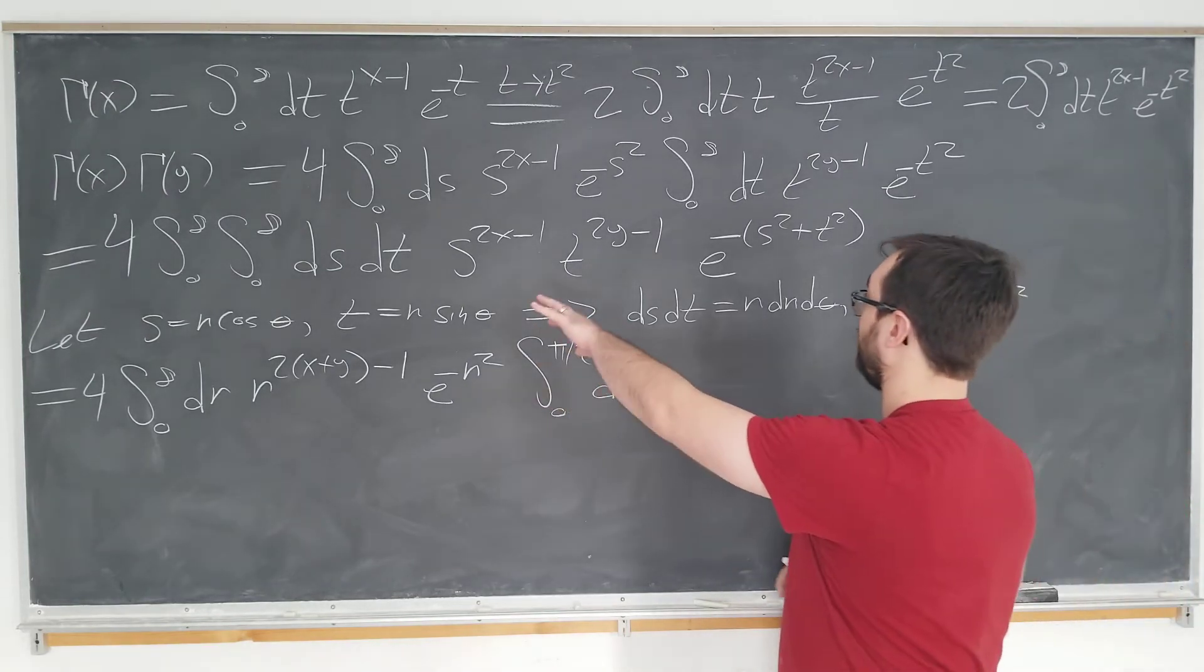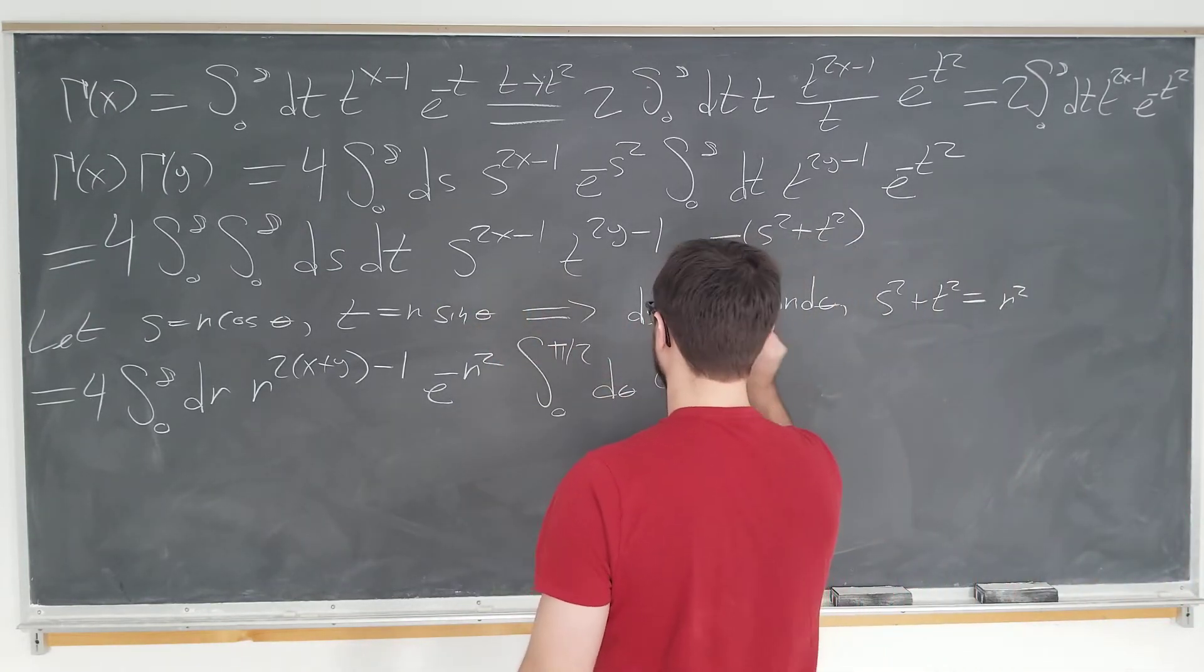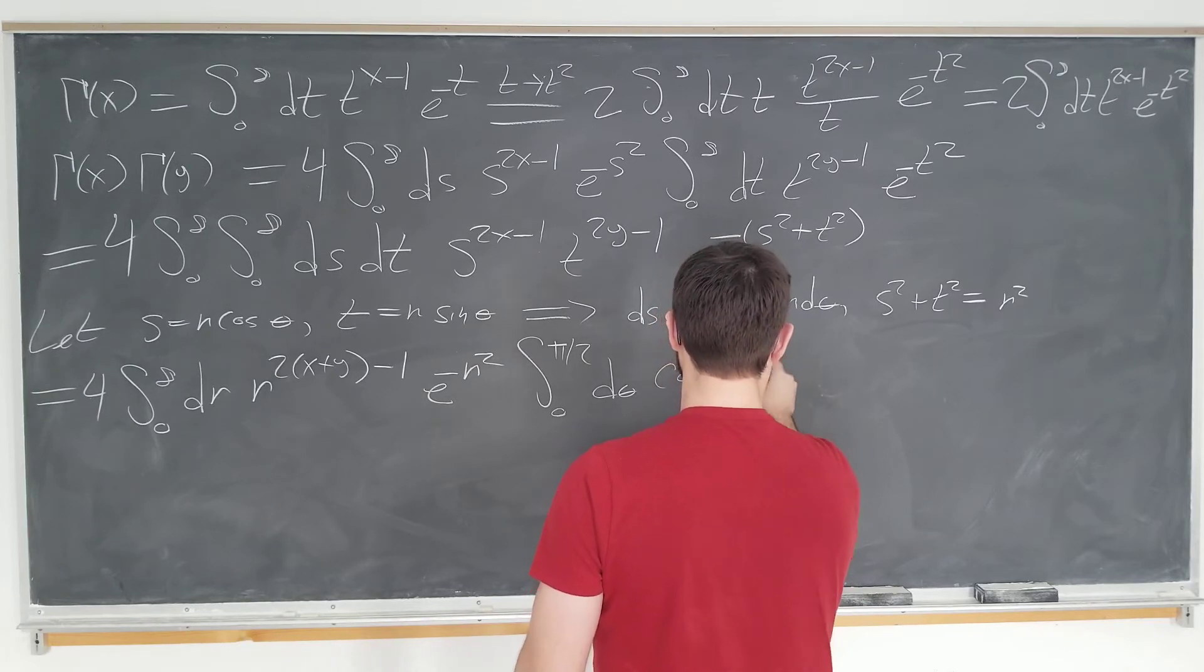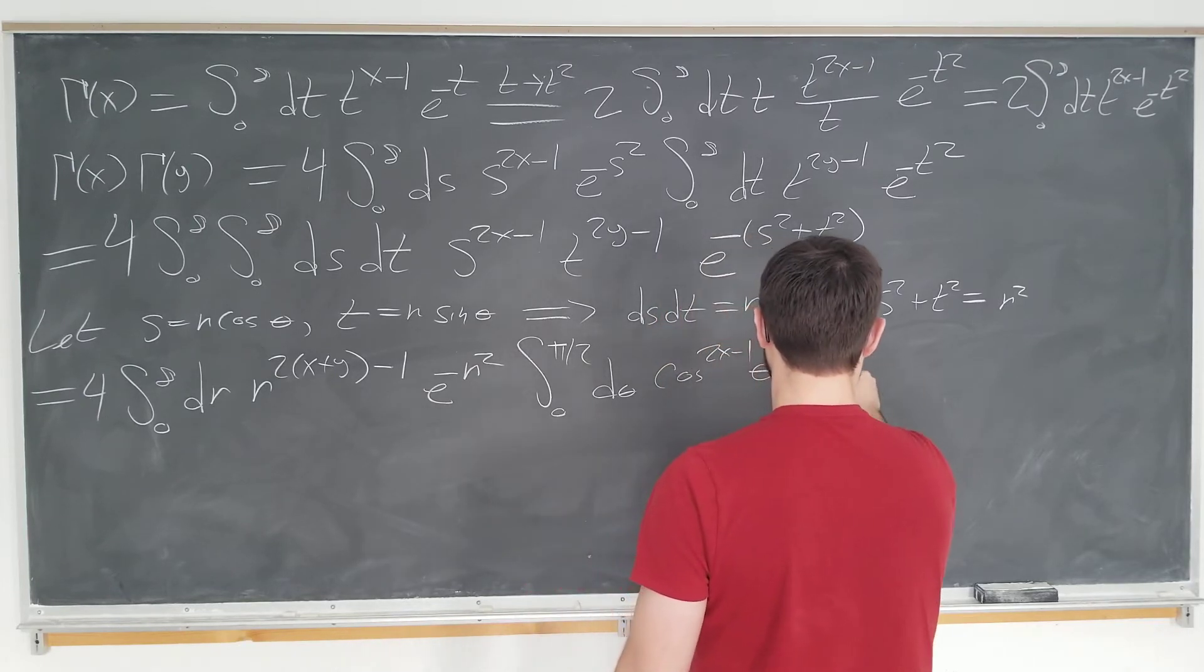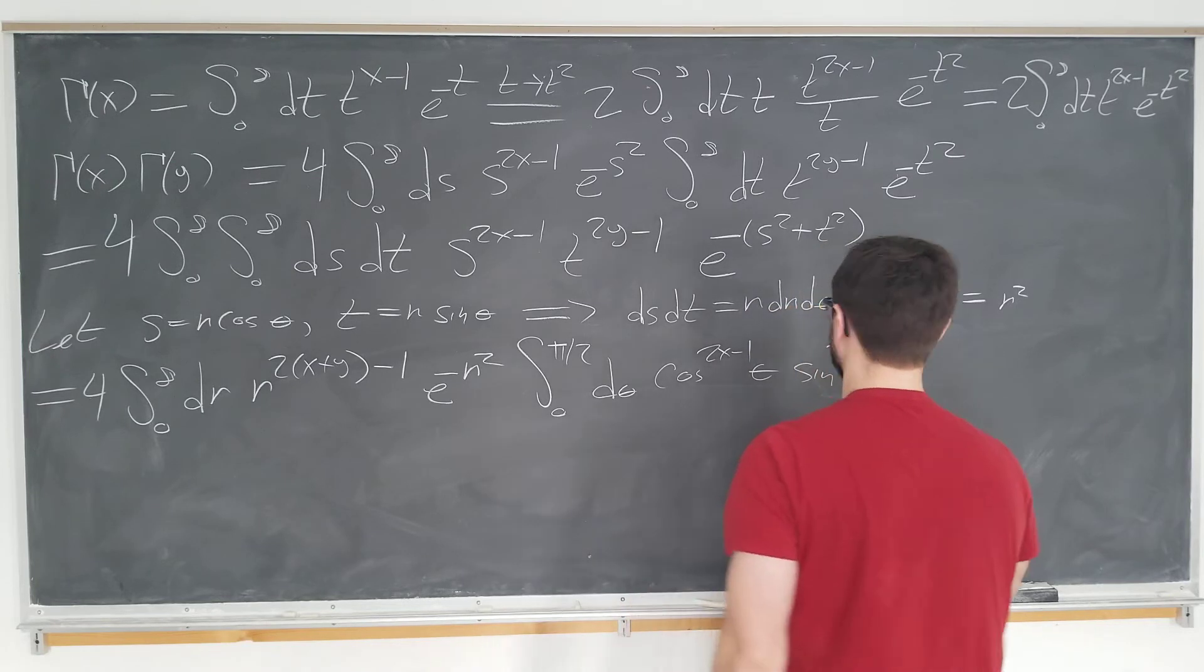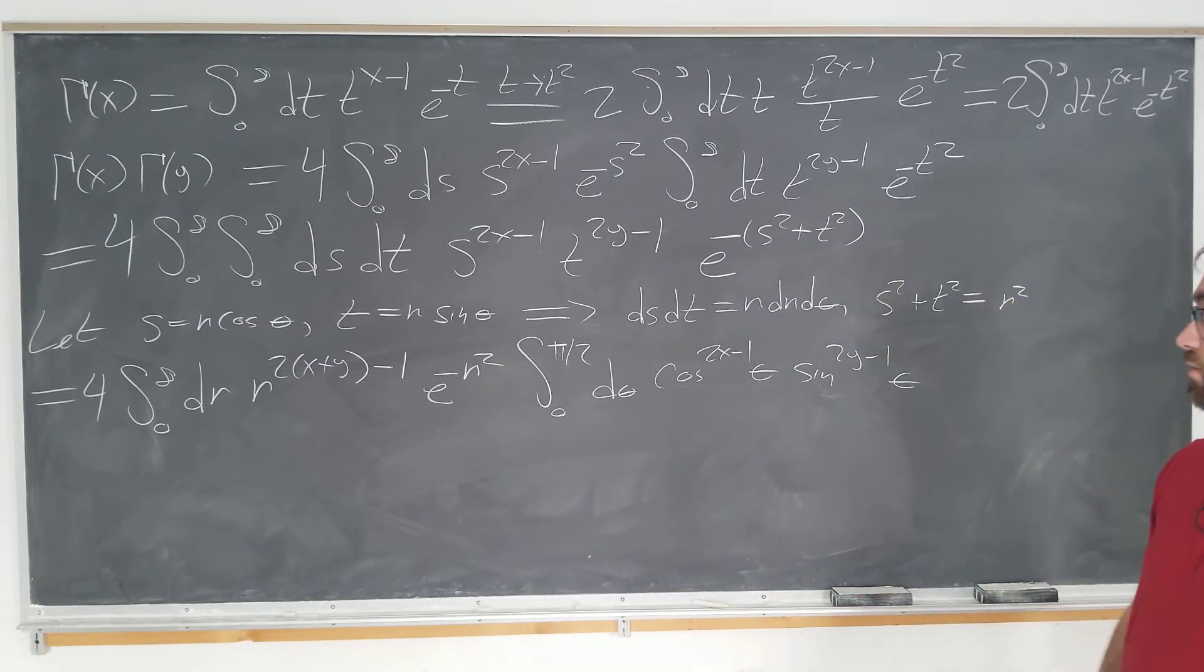Okay, d theta, the cosines are pretty much the same. So, we have cosine 2x minus 1 of theta, sine of 2y minus 1 theta. And we're pretty much done here.